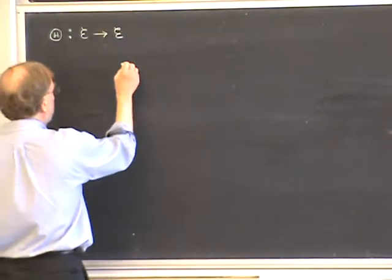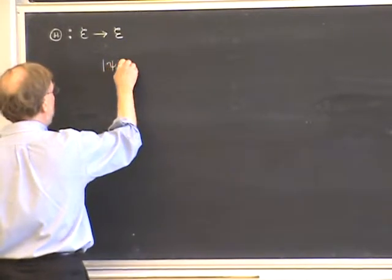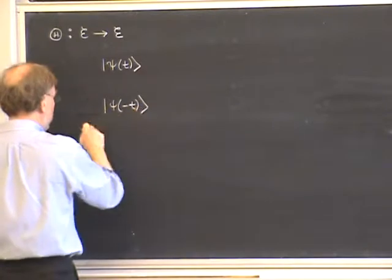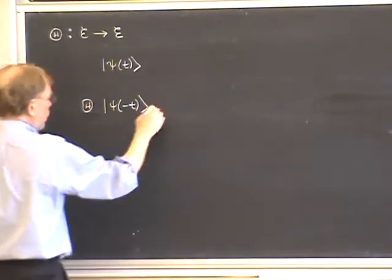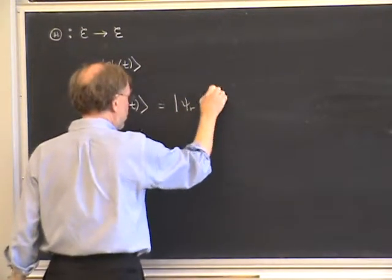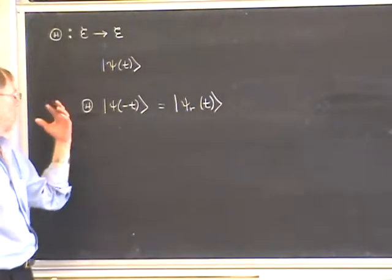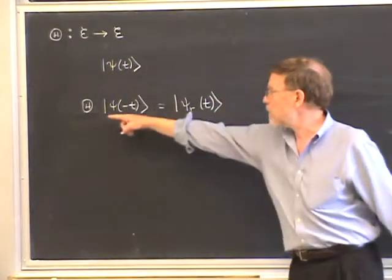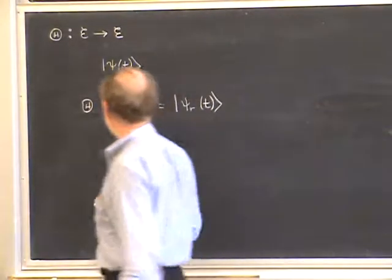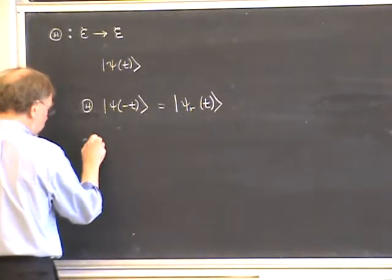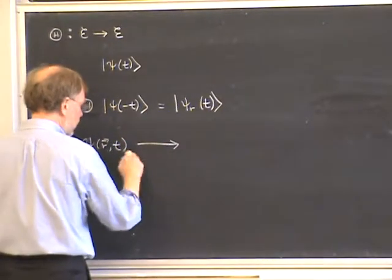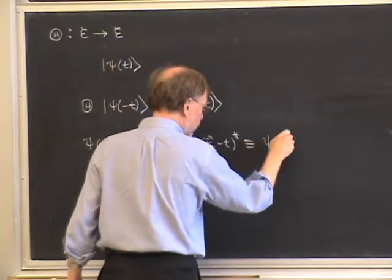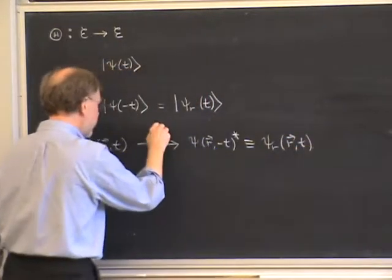What we will do is interpret the following: if we take the state as a function of time—a solution of the Schrödinger equation—we replace t by −t and then apply this time-reversal operator. We regard this as the time-reversed solution, which I'll call ψ_r(t). In wave function language, ψ_r(t) is just the complex conjugate of the original wave function with t replaced by −t. In general ket language, the time-reversal operator is defined by this equation.